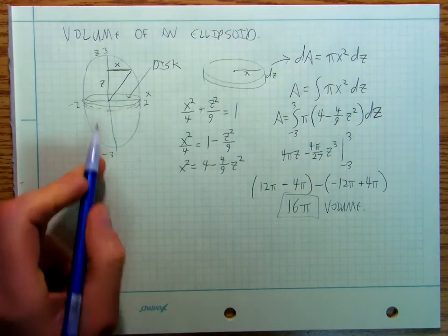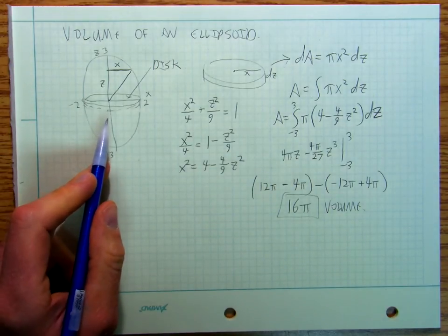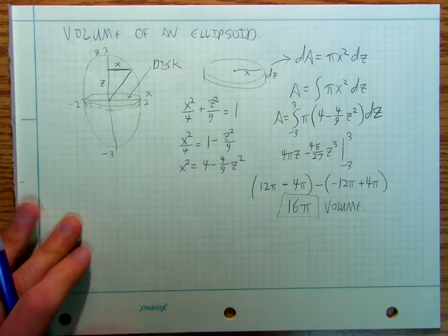So there's the volume of that ellipsoid is going to be 16 pi.